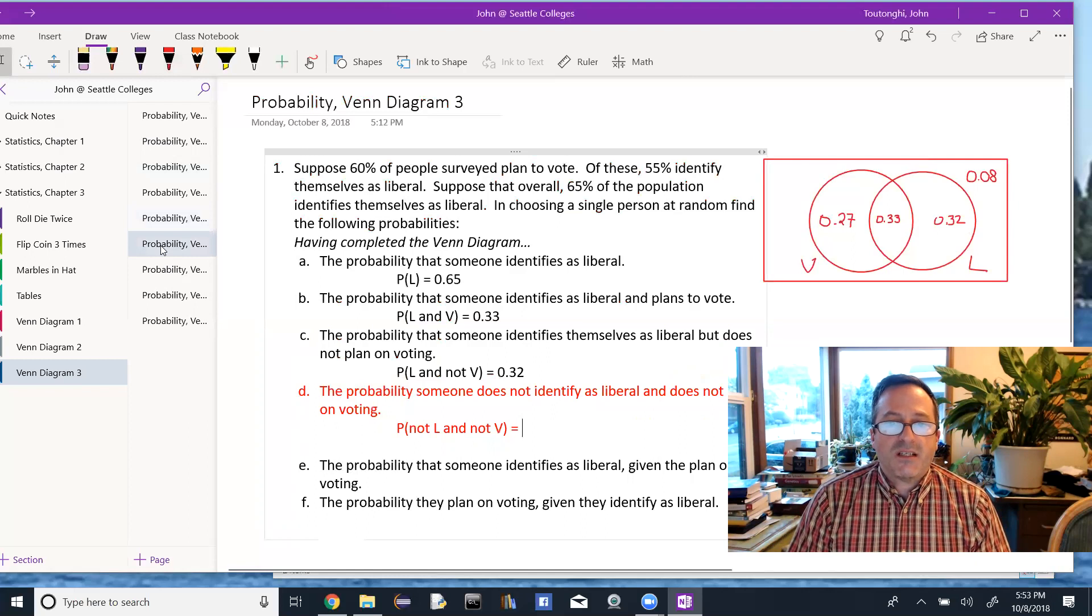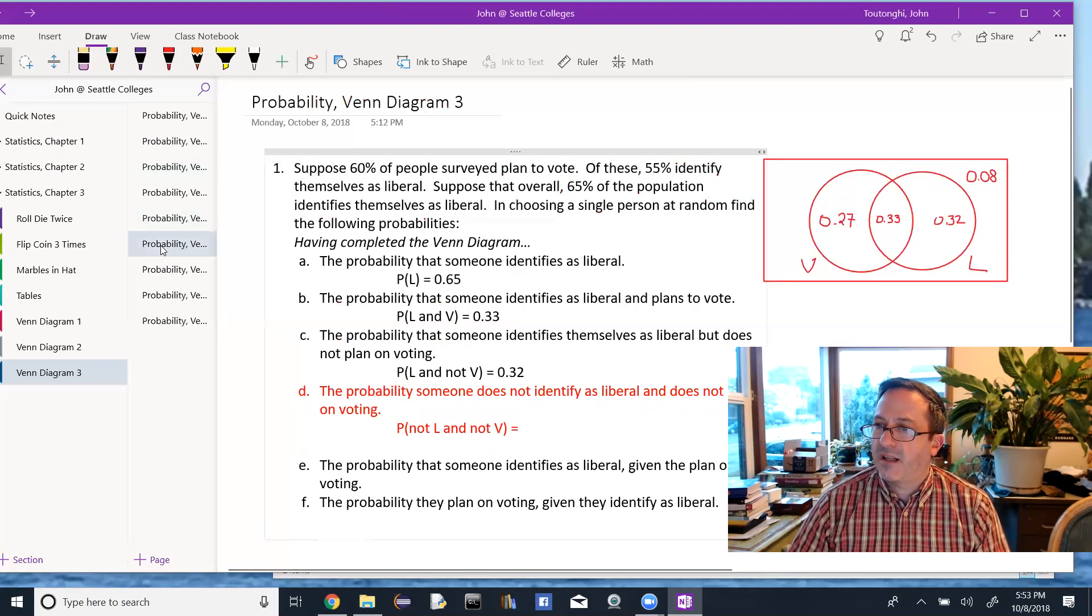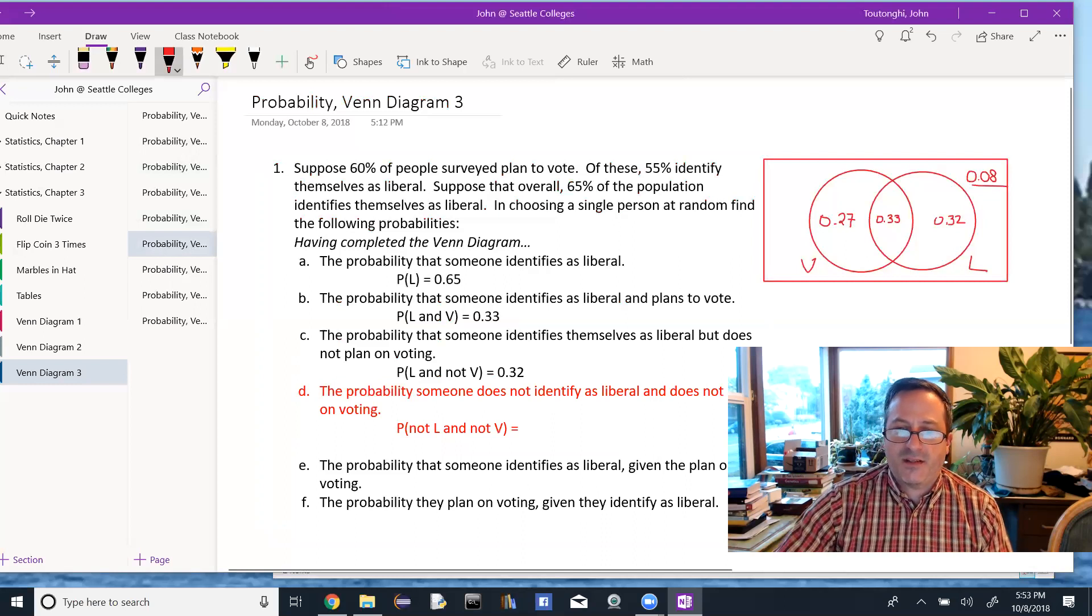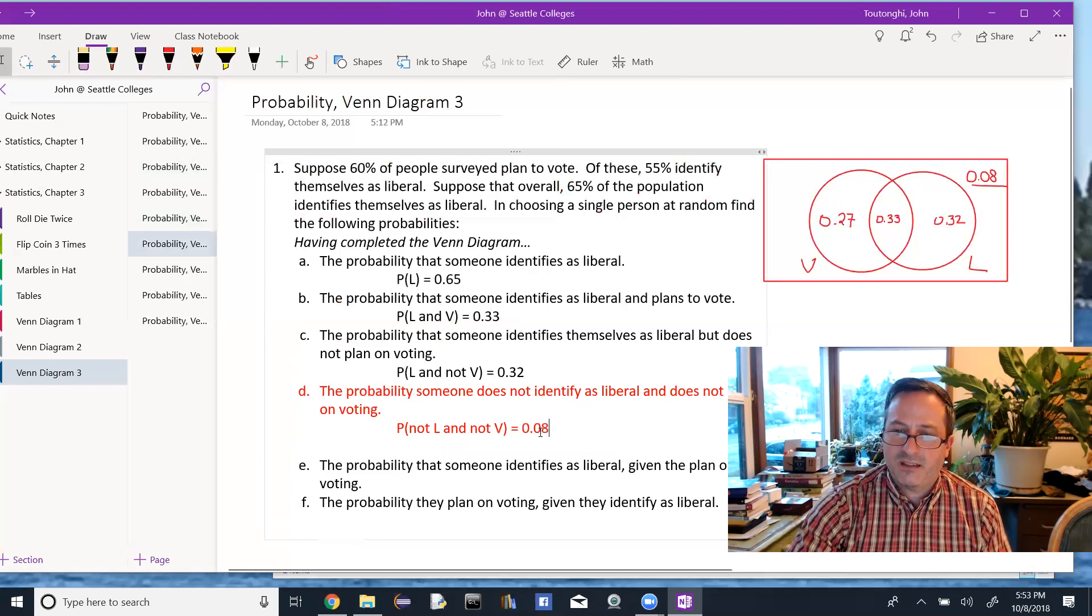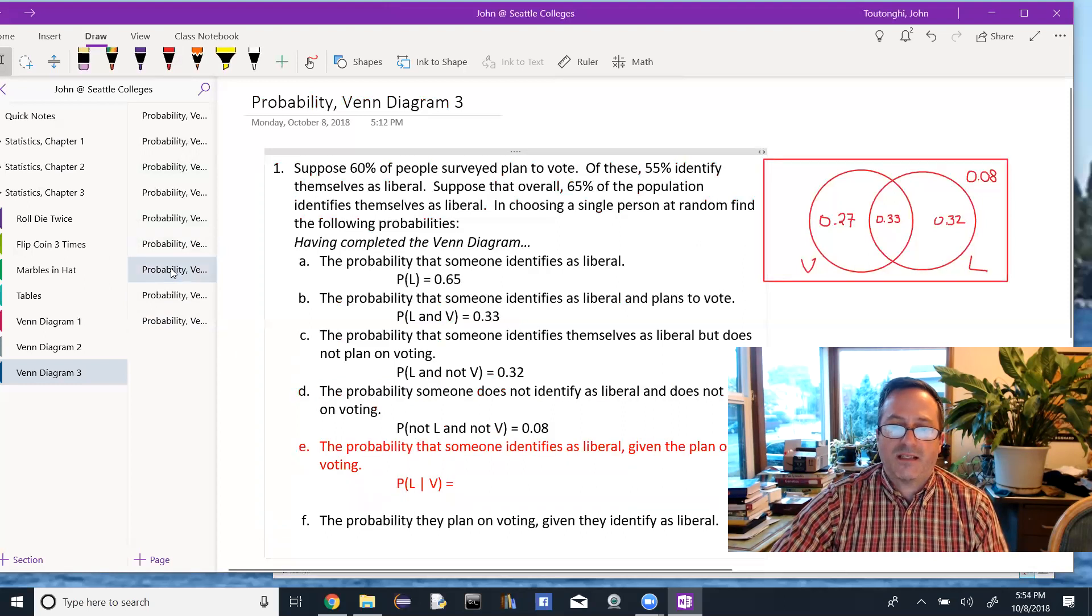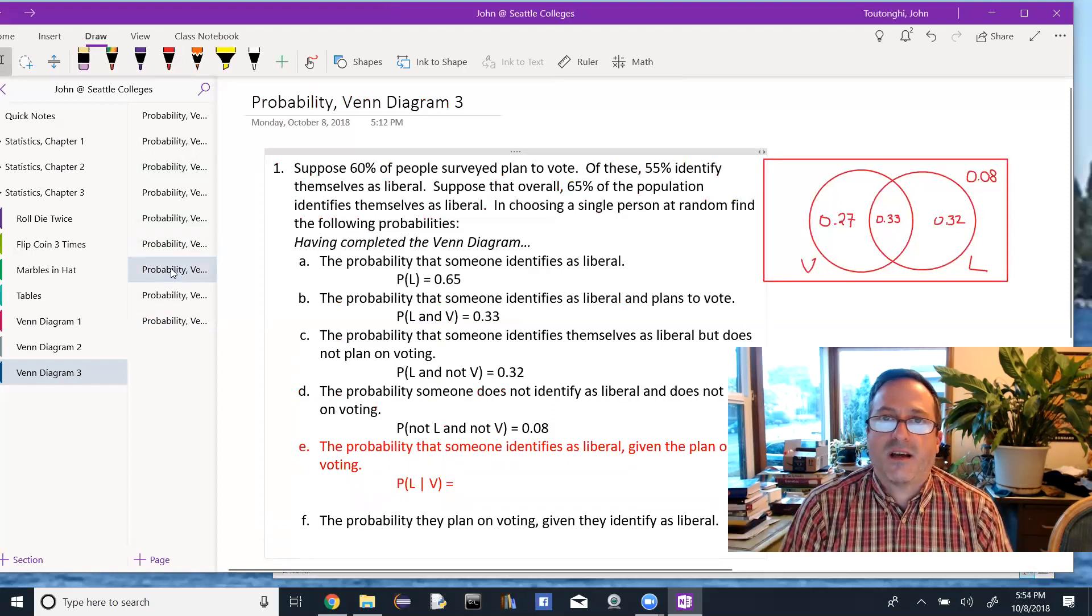The probability that someone does not identify as liberal and does not plan on voting. So they're not in either circle. And we figured that out as well. They're up here. 0.08. So notice, once the Venn diagram is complete, most of the probabilities sort of enter themselves. As long as you know which region you're talking about.